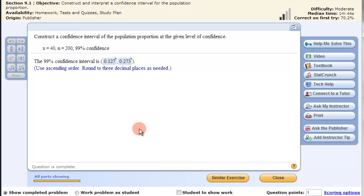In this video we're going to use a TI calculator to construct the confidence interval of the population proportion at a certain level of confidence. So here's our problem.